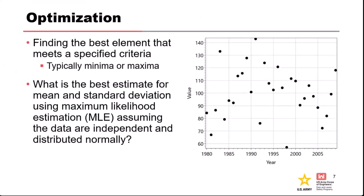For optimization problems — like the maximum likelihood type we did earlier — what's the best estimate for mean and standard deviation using MLE, assuming the data are independent and normally distributed? In this type of application, Monte Carlo works like a guess-and-check approach. You guess the parameters randomly with Monte Carlo, calculate the likelihood as your check, do that many, many times, then search through your results to find the guess that had the highest likelihood. That is your estimate.